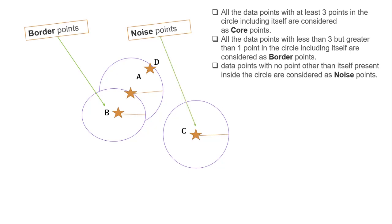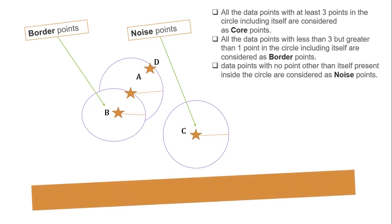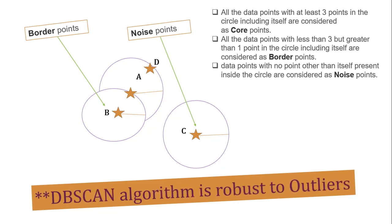This is one of the biggest advantages of the DBSCAN algorithm — it identifies outliers and directly eliminates them without including them in any cluster. So by now you should understand epsilon, minimum points, core points, border points, and noise points. Let's move on to solve a real-world problem.